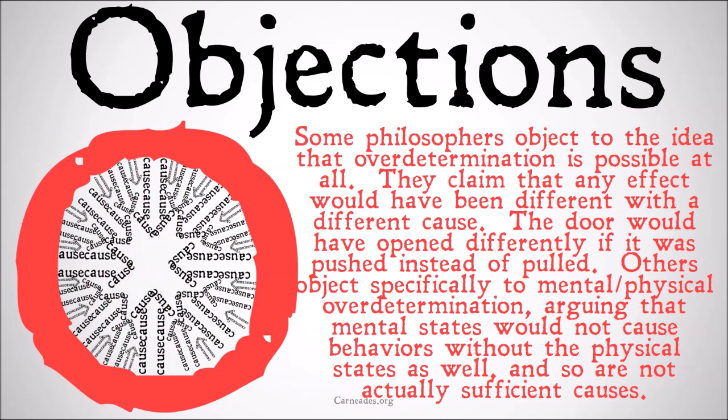Some philosophers object to the idea that over-determination is possible at all. They claim that any effect would have been different with a different cause — the door would have opened differently if it was pushed instead of pulled. Others object specifically to mental or physical over-determination, arguing that mental states would not cause behaviors without the physical states as well, and so are not actually sufficient causes. If there weren't neurons firing, I wouldn't be holding the cup, no matter what the beliefs in my mental states were.